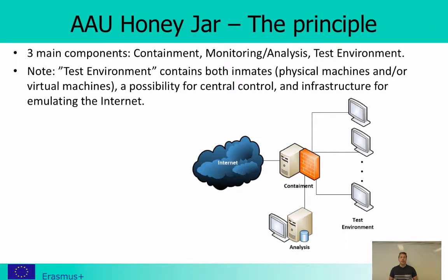What we have here is really a malware testing environment consisting of three main components. Starting from the right side, there is a test environment where we can execute malware and run it to see how it behaves. Then we have a containment part which makes sure we don't send harmful traffic out to the real internet, but still allows us to observe the command and control traffic. Finally, we have the analysis part where we can collect and analyze data, for example for training and testing machine learning algorithms.